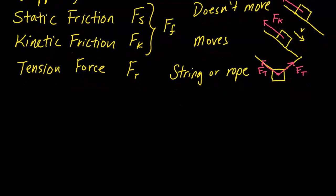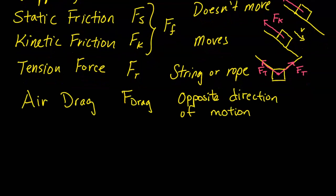Next we have air drag, symbol F_drag, and the direction of air drag is going to be opposite the direction of motion. So if I drop a box and it's going downward, the air drag will be upward. If the object is moving to the right, F_drag would be to the left — it's just the opposite direction of motion.